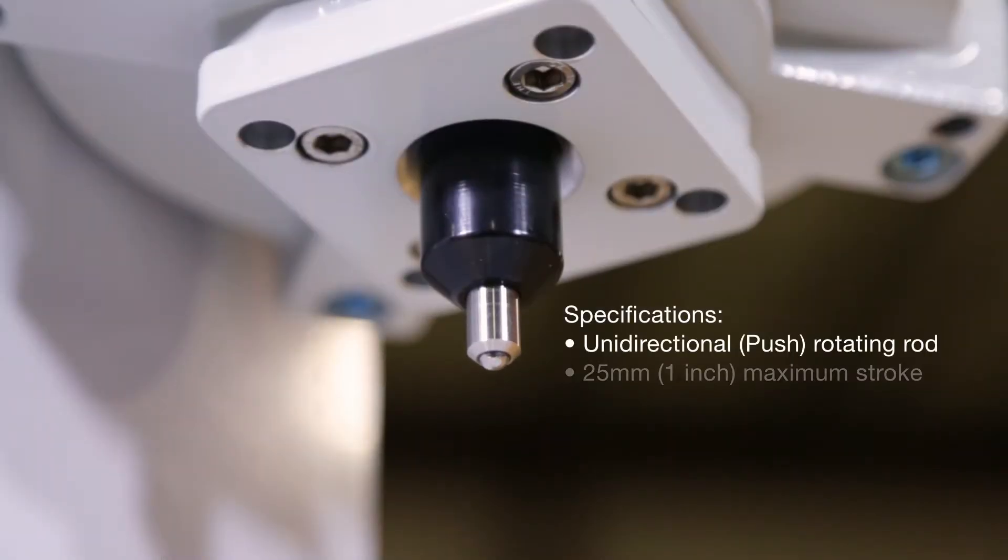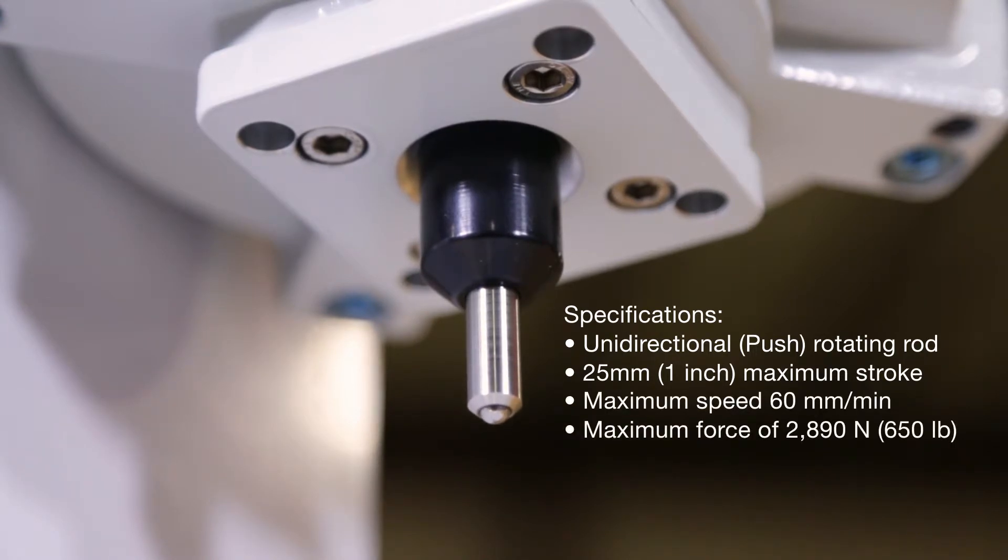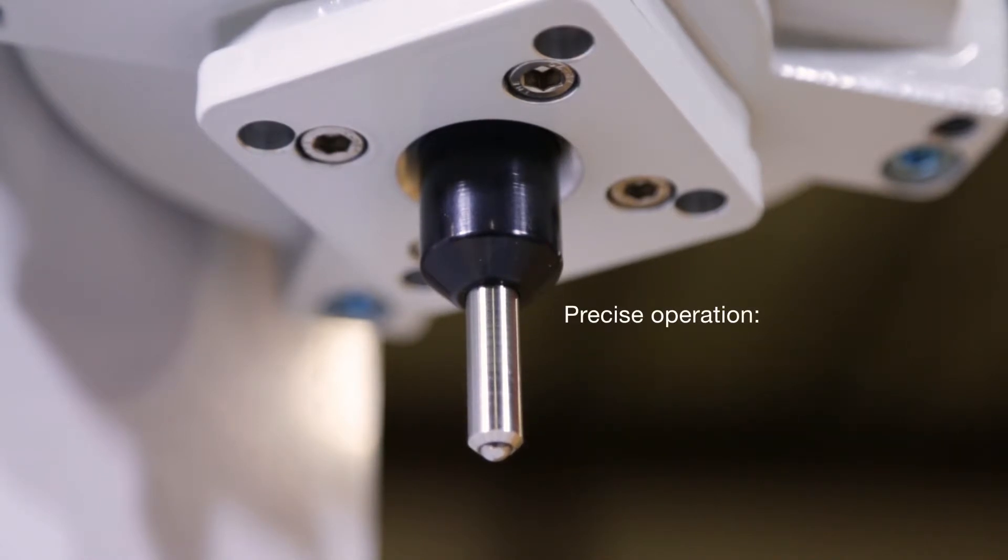Its unidirectional push rod has a 25 millimeter maximum stroke, moving at speeds up to 60 millimeters per minute and a maximum force of 2,890 newtons. The PAX 1 is precise with accuracy plus or minus 1% of the maximum stroke.